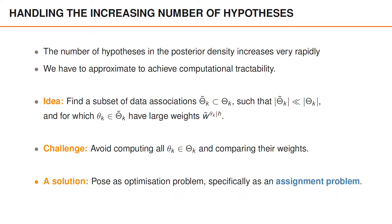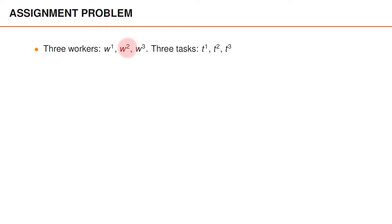A solution to this is to pose this as an optimization problem, specifically an assignment problem. We can explain what an assignment problem is by using an example. Let's say that we have three workers and three tasks, and we need the workers to solve these tasks. The cost for each worker and each task is given by this table. So the cost for the first worker and the first task is 5, the first worker and the second task is 8, and so on.